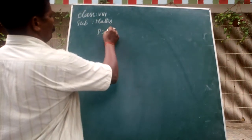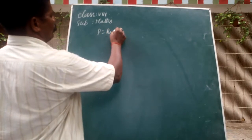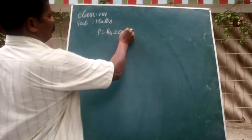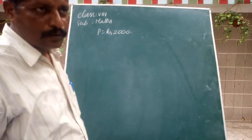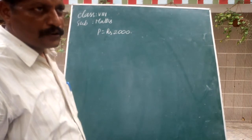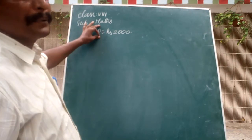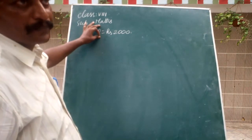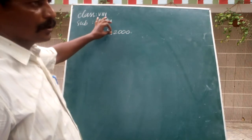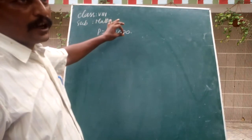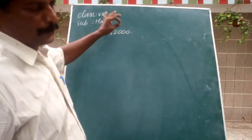Suppose P equals 2,000 rupees. This is called P — principal. Principal means how much you have taken from another person.